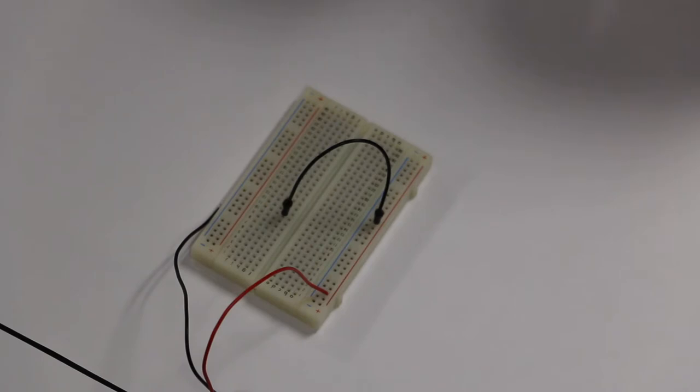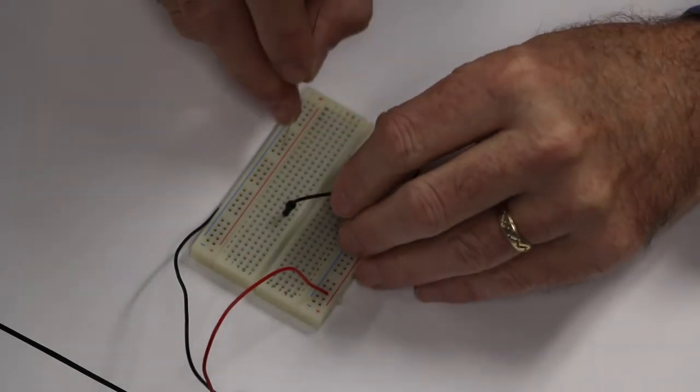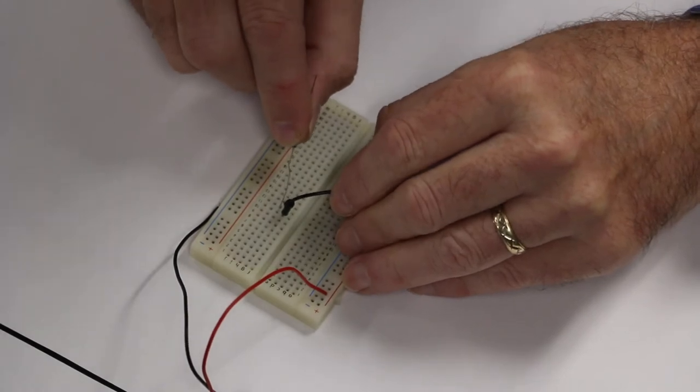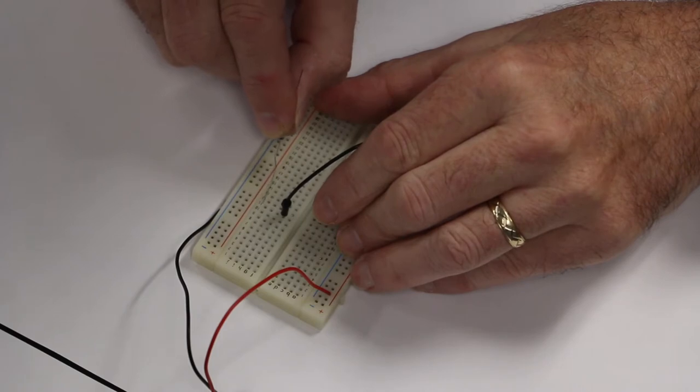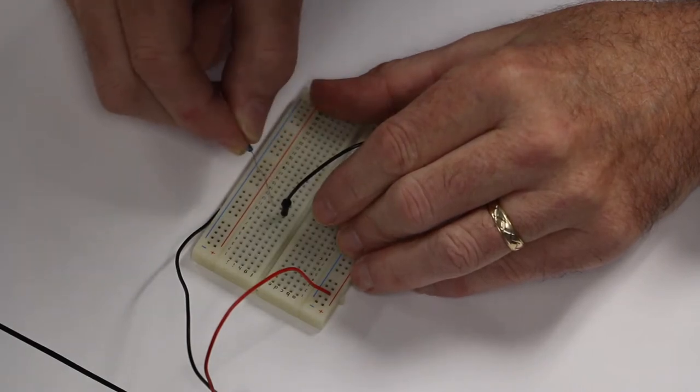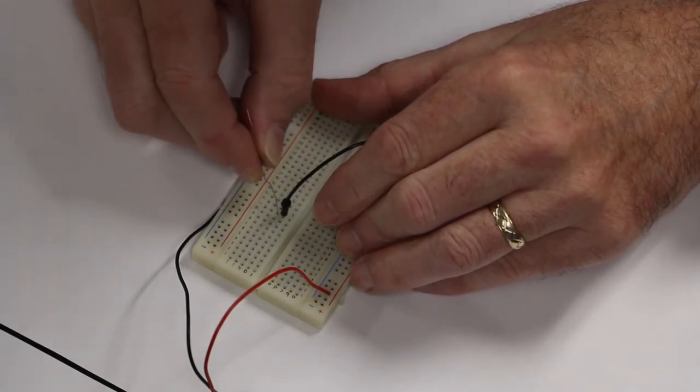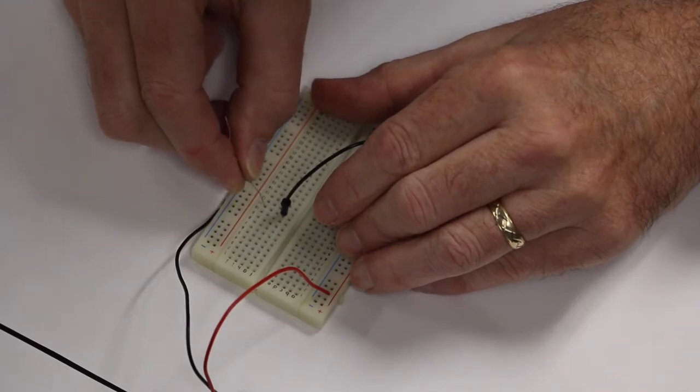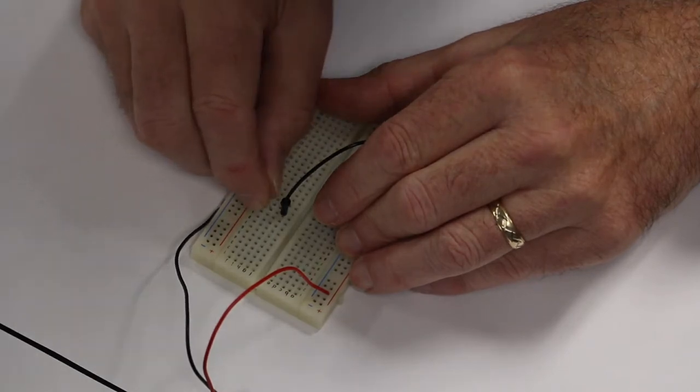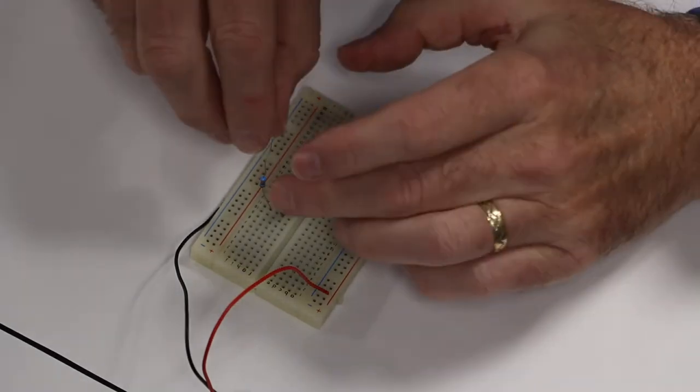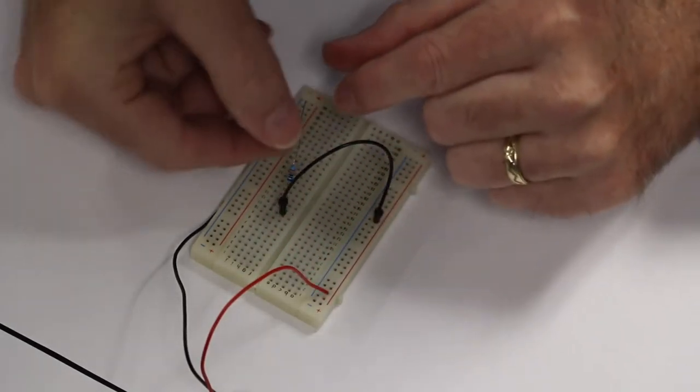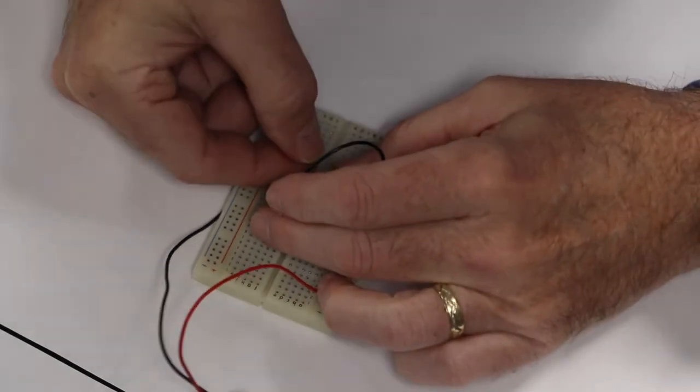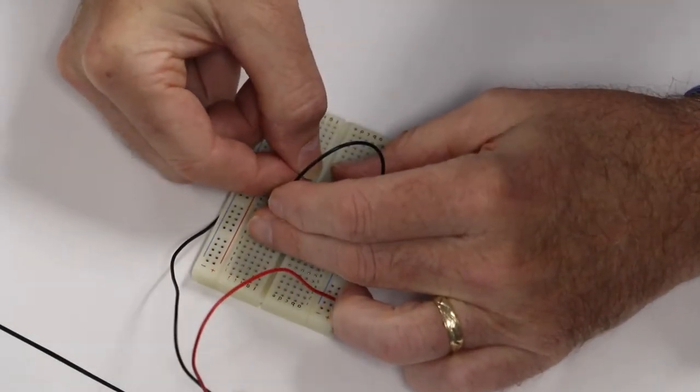Next, we take the resistor. Now, this is sort of important where you put it. You have to put it in the same line as where this jumper terminates. So like right here, I have it in 11. So I have to put it somewhere in 11. It can be right next to it. It could be all the way down. It just has to be in this row 11. And then I take the other end.